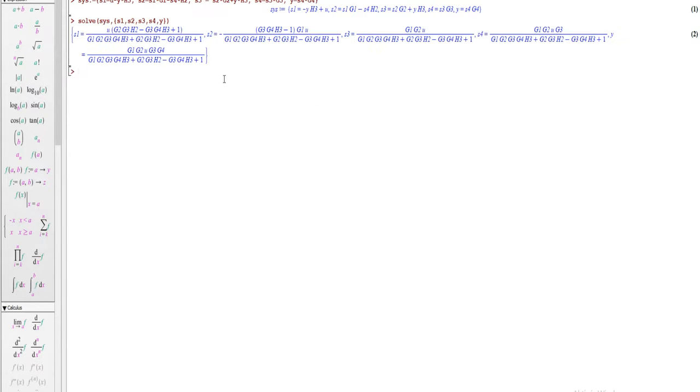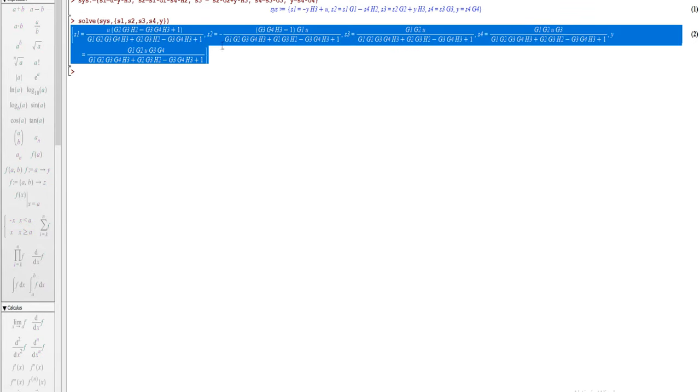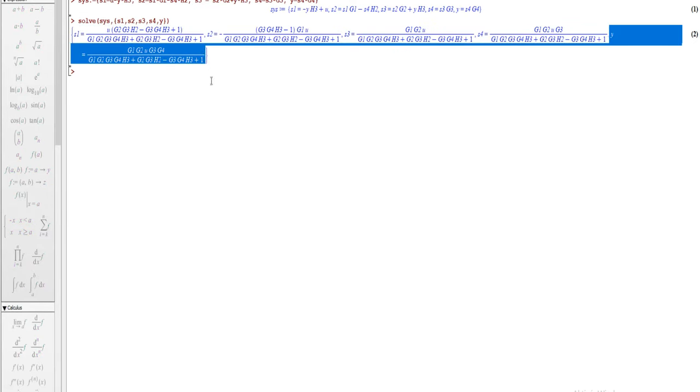We get five different results, but the only one we care about is this one, which is the result for Y. If we look at it,